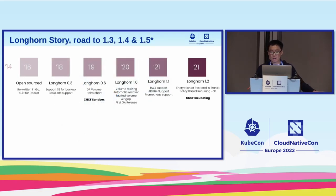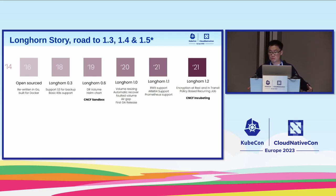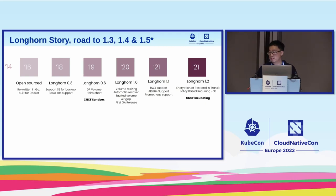Looking at the Longhorn story: from version 0.3 we started having external backup store with S3. In 0.6, disaster recovery volumes appeared. In 1.2, more volume capabilities were added. In 1.1, we started graduating experimental features. In 1.2, encryption and recurring jobs were added.